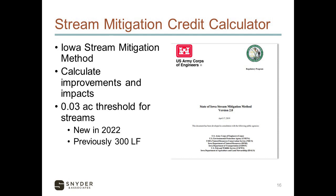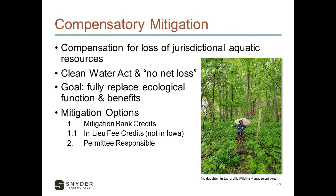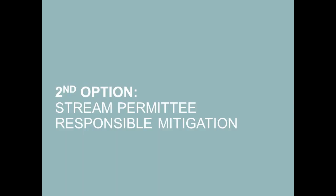Stream length is also considered. What is compensatory mitigation? We've talked about mitigation already; now we're going to talk about the compensation for loss of jurisdictional resources. For example, if your project has to impact 0.11 acres of wetland, your obligation through 404 permitting is to offset the loss of wetland impacts either through the purchase of mitigation bank credits, which is option number one, or through permittee-responsible mitigation if mitigation bank credits are not available.